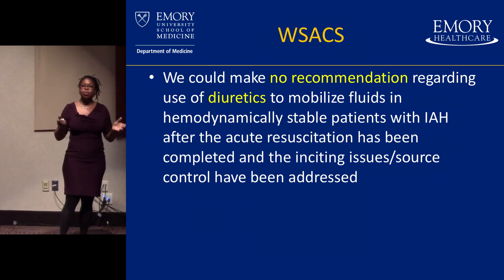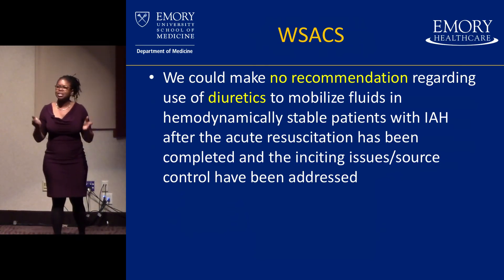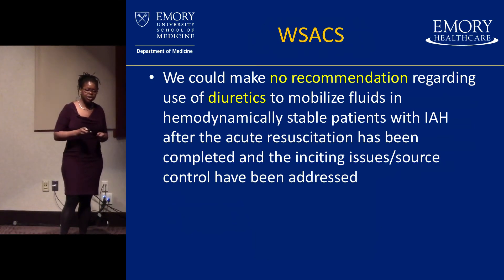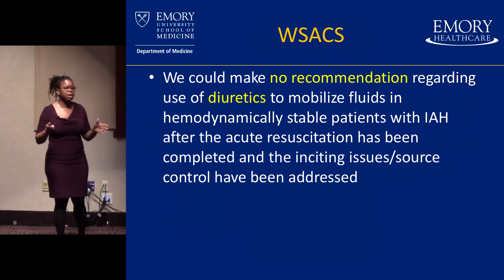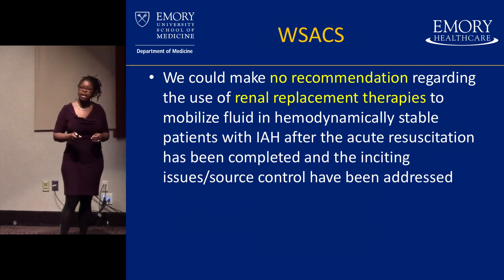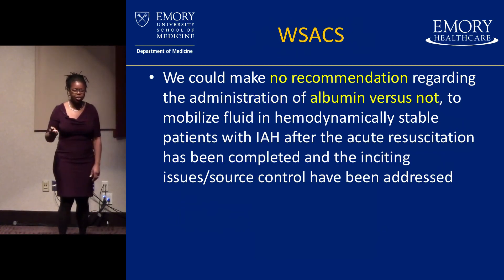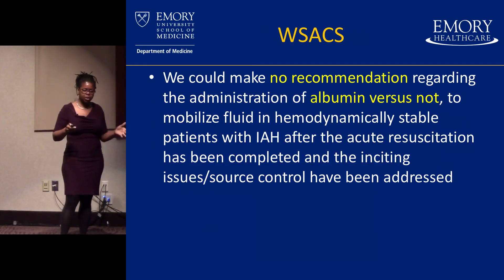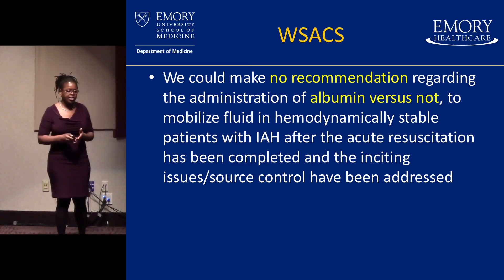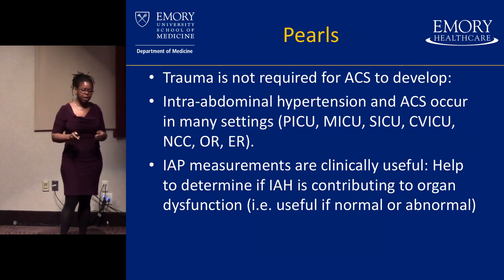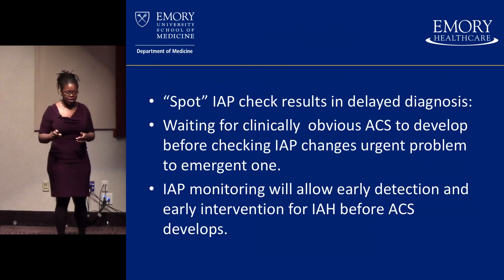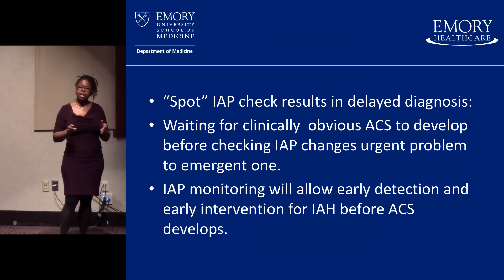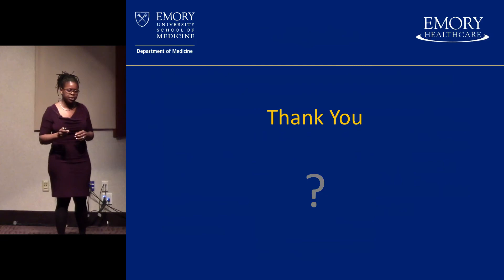There is a society — the World Society for Abdominal Compartment Syndrome — and they have said there are no recommendations for diuretics or renal replacement therapy in a hemodynamically stable patient with intra-abdominal hypertension once acute resuscitation is completed and the inciting issues are controlled. Key takeaways: trauma is not required for ACS to develop; it can occur in any unit. Measurement is helpful but don't wait too long — spot checks can be erroneous. Intra-abdominal pressure monitoring allows early detection and early intervention.